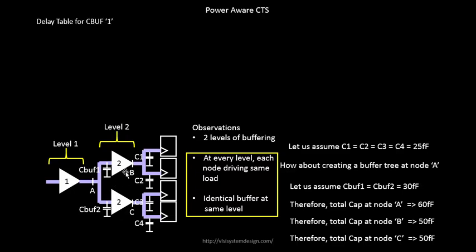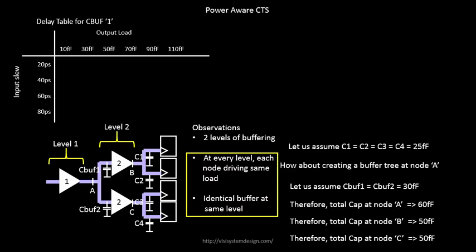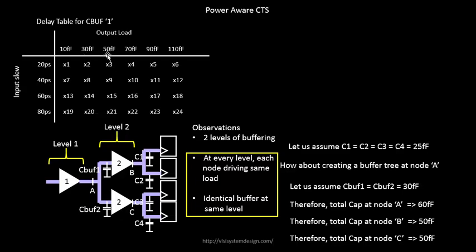Next, we'll try to create a delay table for this particular cell. If you want to calculate the delay of a cell, you don't run SPICE every time - you already have a ready-made delay table. This delay table consists of input slew and output load. It's a combination of input slew and output load, and whatever is the value of their intersection is considered as the delay. For example, if this particular buffer has an input slew of 80 picoseconds and an output load of 70 femtofarads, the delay of this cell will be X22.